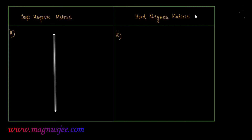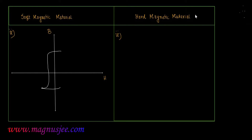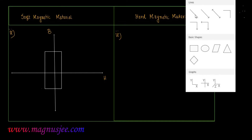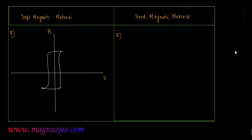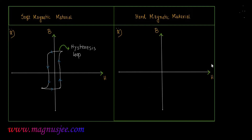We can draw the hysteresis loop for soft magnetic material. Magnetic intensity H is plotted along the horizontal axis and magnetic flux density B is plotted along the vertical axis. Hysteresis means lagging of magnetic flux density with respect to magnetic field strength H. If we change magnetic field strength H, magnetic flux density of soft magnetic material will follow this type of hysteresis loop, where B lags behind H.